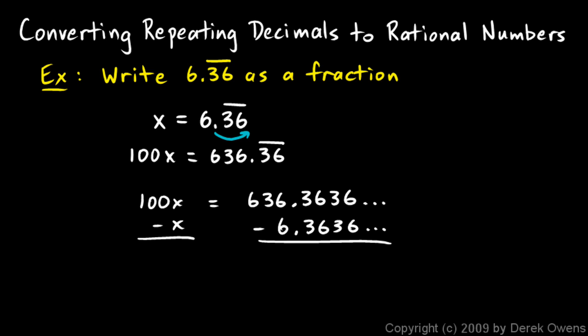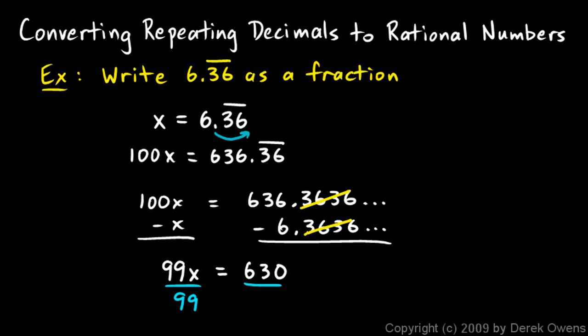When you line them up carefully, it's easy to see that when you subtract, all of those decimal digits are going to get lopped off. So I'm left with 100x minus x, which is 99x on the left. And on the right I have 636 minus 6, which is 630. I divide both sides by 99, and I'm left with x equals 630 over 99.